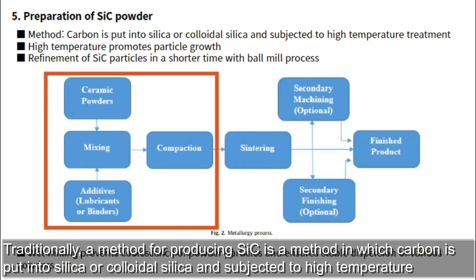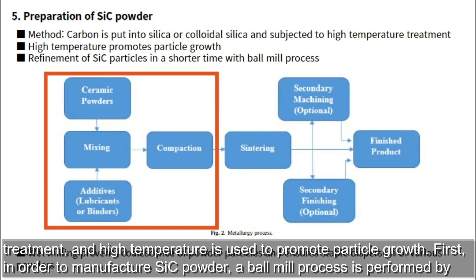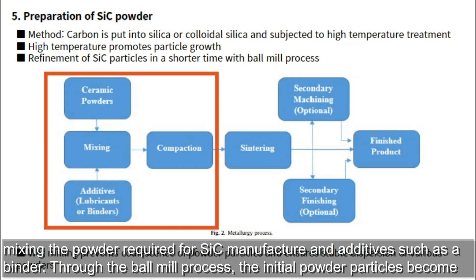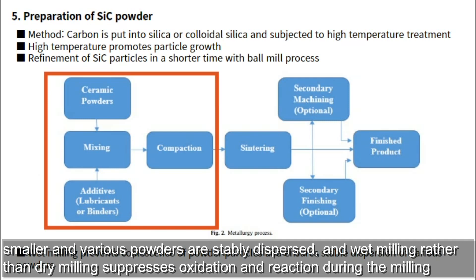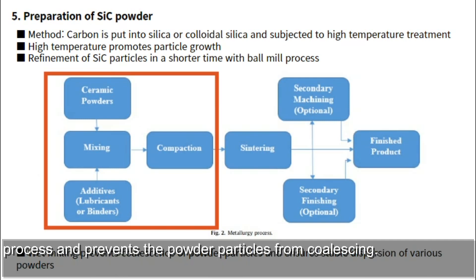Traditionally, a method for producing SiC involves placing carbon into silica or colloidal silica and subjecting it to high temperature treatment to promote particle growth. To manufacture SiC powder, a ball mill process is performed by mixing the required powder and additives. Through ball milling, the initial powder particles become smaller and various powders are uniformly dispersed. Wet milling rather than dry milling suppresses oxidation and reaction during milling and prevents powder particles from coalescing.